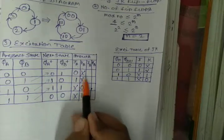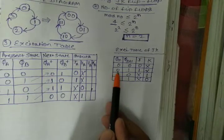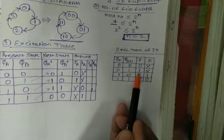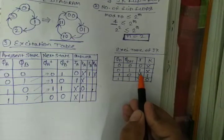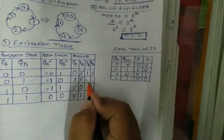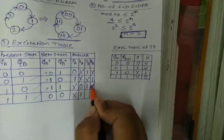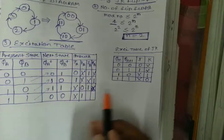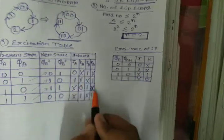For JB and KB, we take present state as QB and next state as QB+. When QB=0 and QB+=1, JB=1 and KB=X. For QB=1 and QB+=0, JB=X and KB=1. Then QB=0 and QB+=1 gives 1 X again, and QB=1 and QB+=0 gives X 1 again. So the excitation table is completely filled now.